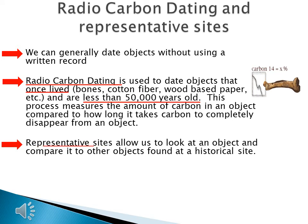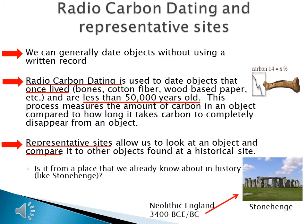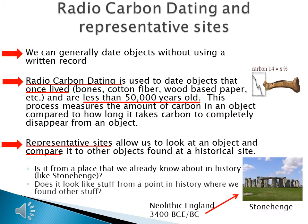The other tool we use is representative sites. Representative sites allow us to look at an object and compare it to other objects found at a historical site. For example, with Stonehenge — is the object from a place we already know about in history? Did we find the same or similar objects at Stonehenge that we might have found somewhere else, or does it look like stuff from a point in history where we found other things? Both of these tools can be used to date objects from prehistory or history.